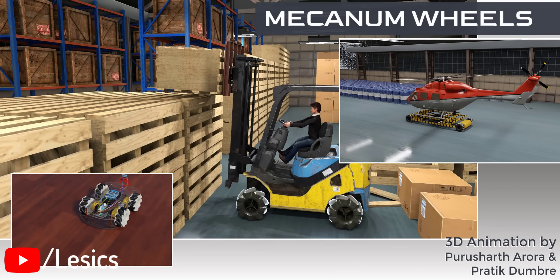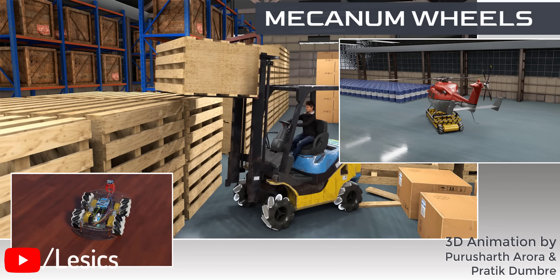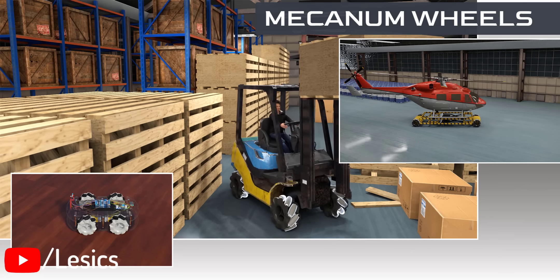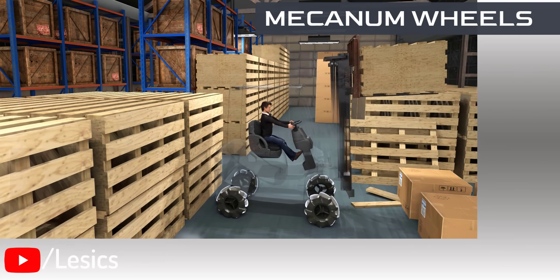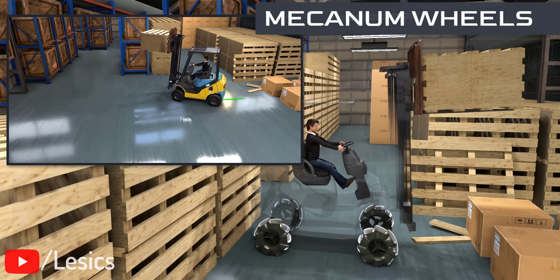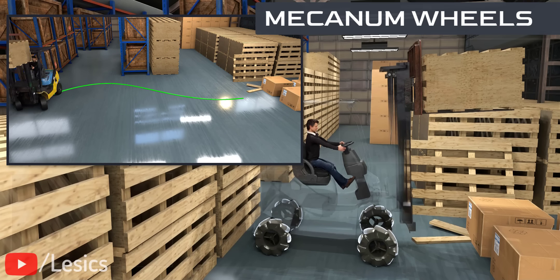Mechanum wheel-fitted robots or industrial machines can make a 180-degree turn without taking much space, whereas a normal forklift takes a lot of space and time to achieve the same task.